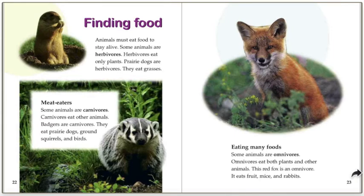Some animals are omnivores — omnivores eat both plants and other animals. This red fox is an omnivore; it eats fruit, mice, and rabbits. Let's think about whether we are an herbivore, carnivore, or omnivore. We're an omnivore because we eat meat and vegetables and plants. We eat salads, carrots, and fruit, but we also eat chicken, beef, and fish. So we are an omnivore.